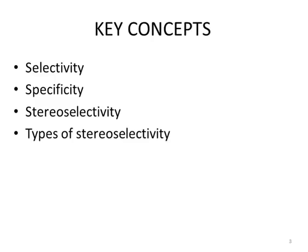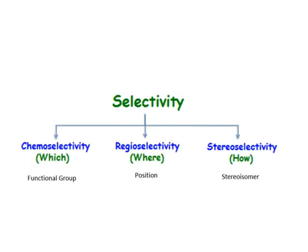The key concepts of this lecture will include a revision of selectivity and specificity, and most importantly, the types of stereoselectivity. So, what is selectivity? Whenever you are considering a reaction that results in formation of two products while one of the two products is dominating — if there is a preference of a reaction mechanism to favor formation of one product over another — this is called preference or selectivity.